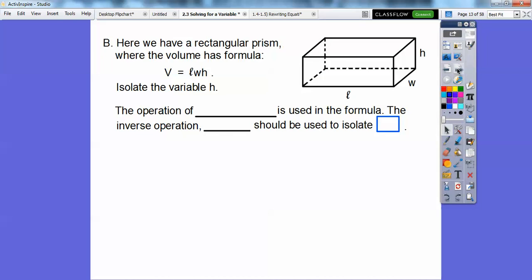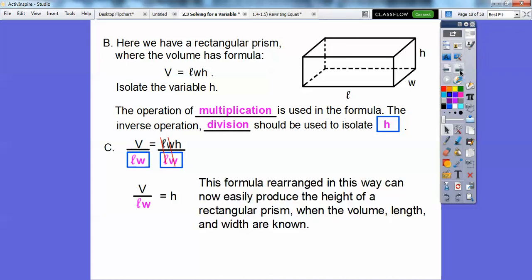Alright, so here we have a rectangular prism with the volume formula. The volume formula is volume equals length times width times height. So let's isolate h. The operation of multiplication is used, so the inverse operation is division. Let's divide both sides by LW. The L's will cancel, the W's will cancel. So there's our h formula, h equals V over LW. This formula, rearranging this way, could now easily produce the height of a rectangular prism when they give you the volume and the length and the width.